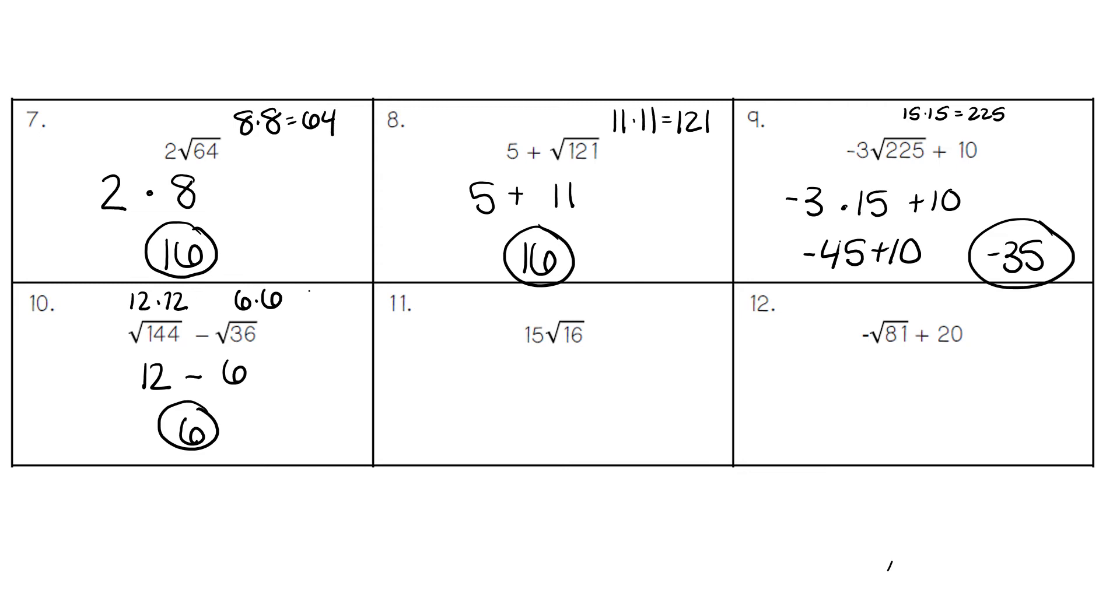In number 11, we leave the 15 out in front, and because it's side by side, we're going to multiply by the square root of 16. The square root of 16 is 4, because 4 times 4 equals 16. 15 times 4 gives us 60.